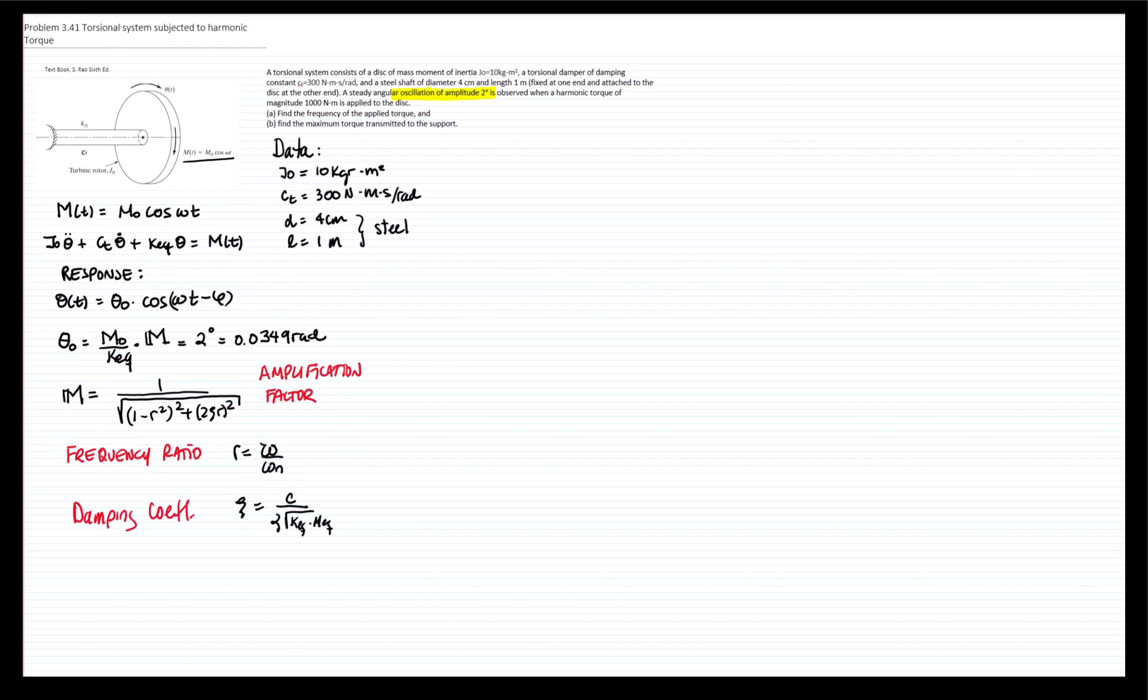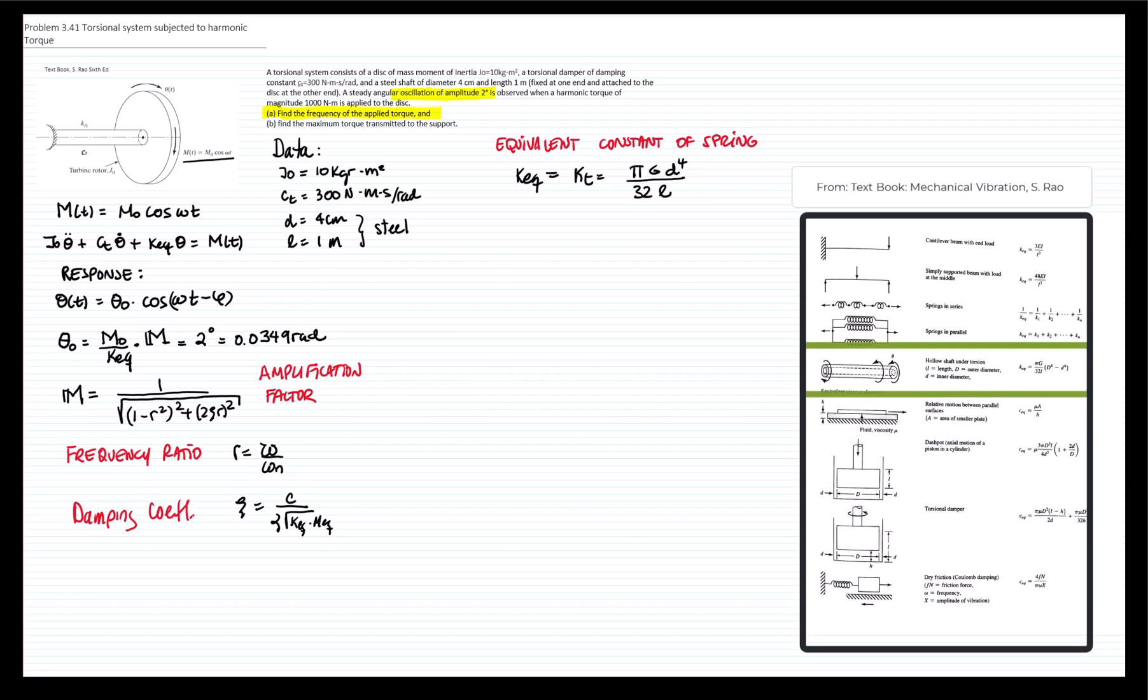Therefore, we need to find the natural frequency and zeta in order to answer the first question, which is find the frequency applied. So therefore, let's find the characteristics of the system, meaning the natural frequency and the frequency ratio. Let's find the equivalent constant of the spring. We know that for a rotational shaft, this is pi G D to the fourth divided by 32 L.